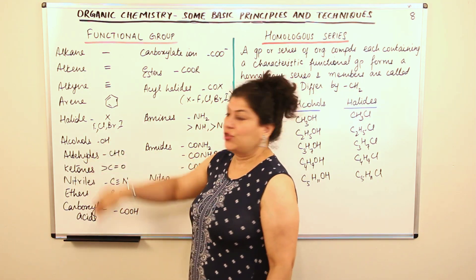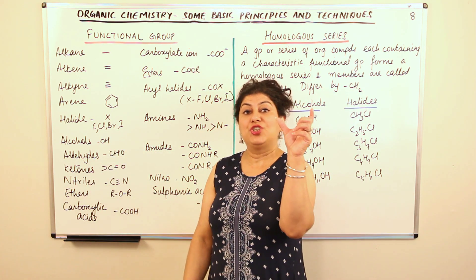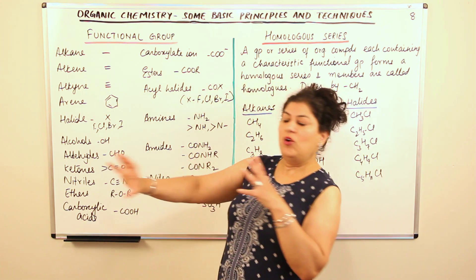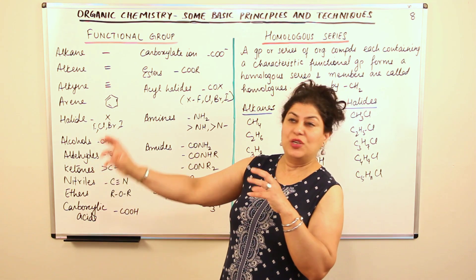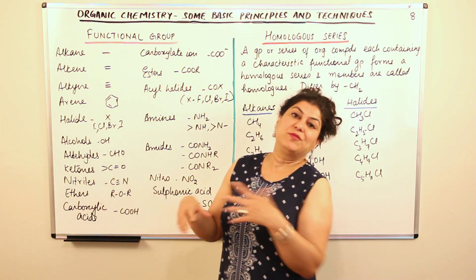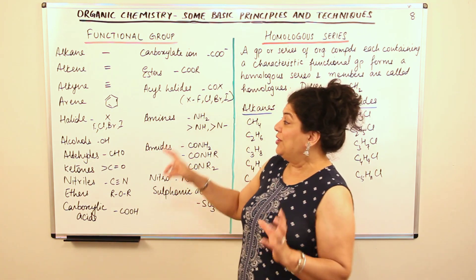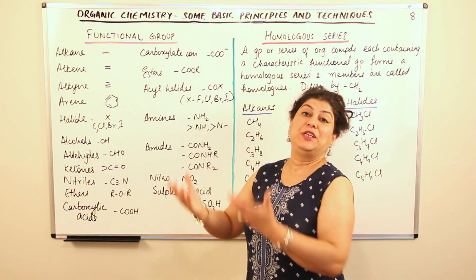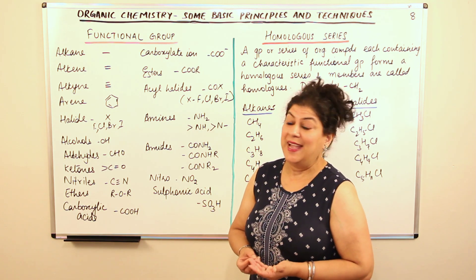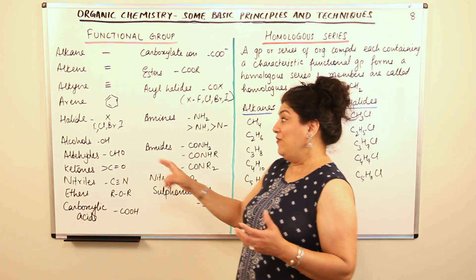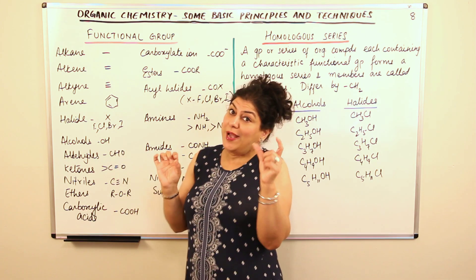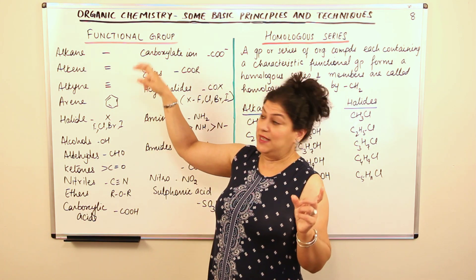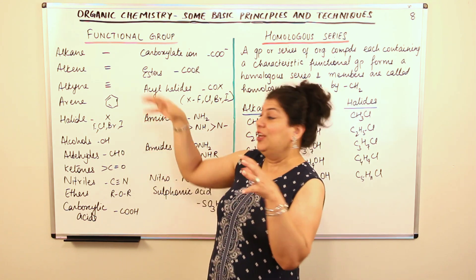When you have an OH group, the OH group is known as the alcoholic group. Any organic compound that has OH in it becomes an alcohol. And since it becomes an alcohol, it has the properties of alcohols. Therefore, the OH part is responsible for those properties and is the functional group.